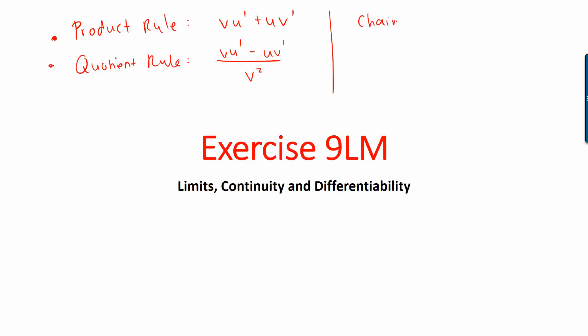Learn those three rules: product rule, quotient rule, and chain rule. What was the chain rule again — can I please have Richie? What's the chain rule? dy over du times du over dx equals dy over dx. It's one of those three. Now remember, along with those, we're also missing one more — what is it, Aaron?